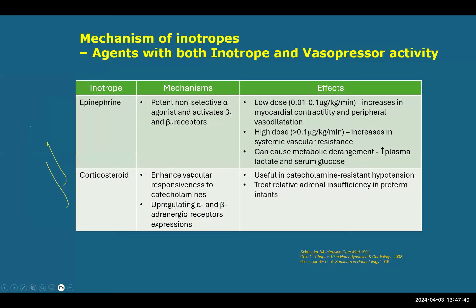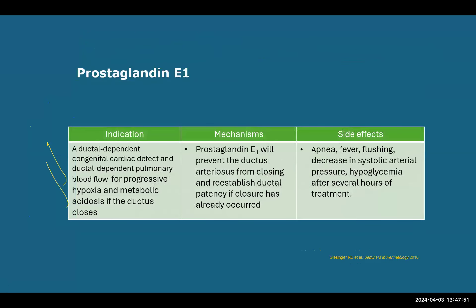Steroids are frequently used to enhance vascular responsiveness to catecholamines and may also be useful when there is concern about relative adrenal insufficiency. For infants with RV-dependent systemic circulation, PGE will be helpful as a pop-off valve to maintain circulation. For infants with structural or functional ductal constriction, maintaining ductal opening at 0.01-0.02 micrograms per kg per minute will be really helpful, at least temporarily, to maintain systemic circulation.